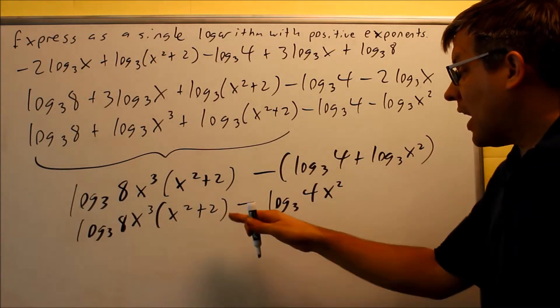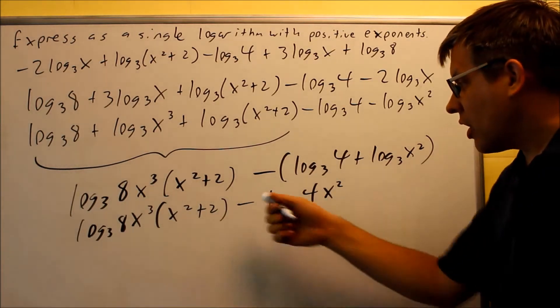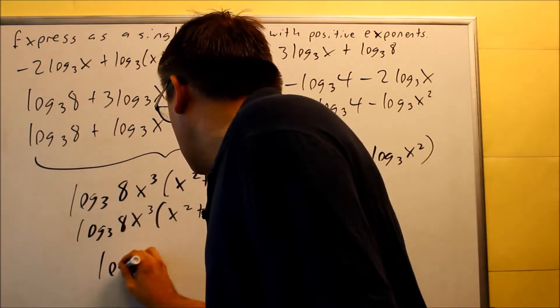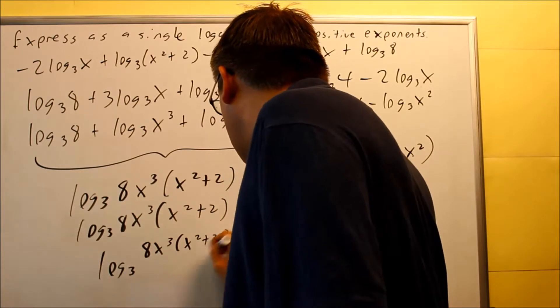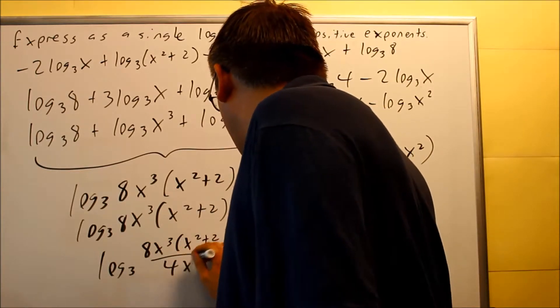Almost done. I have these two separate logs. I'm turning it into a single one. I've got a minus sign in between, so I'm going to do log₃ of 8x³(x² + 2) over 4x².